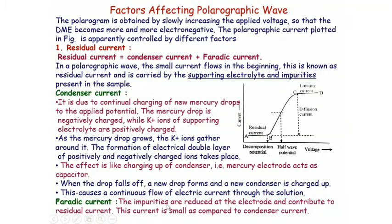The second component of residual current is the Faradic current, which is due to impurities. At that potential value, impurities present in the solution are reduced, generating a small current called Faradic current. The impurities are reduced at the electrode and contribute to the residual current. This current is small compared to the condenser current. Therefore, the portion AB shows residual current, which is the sum of condenser current (due to supporting electrolyte) and Faradic current (due to reduction of impurities).